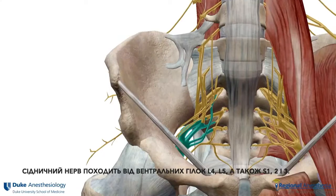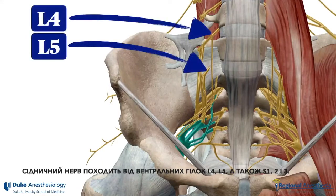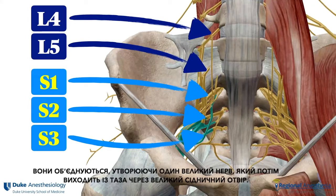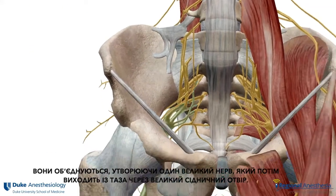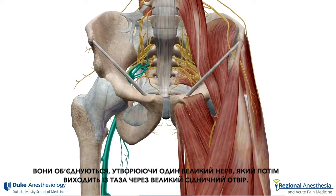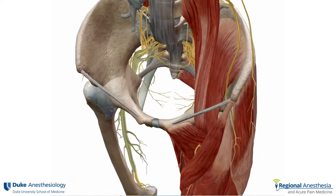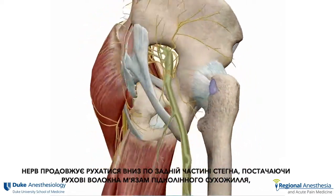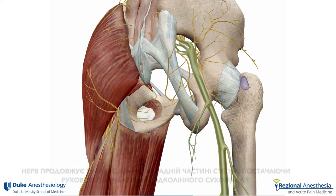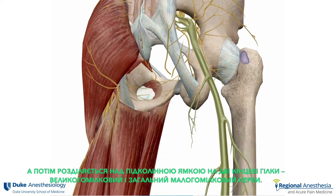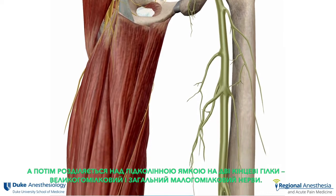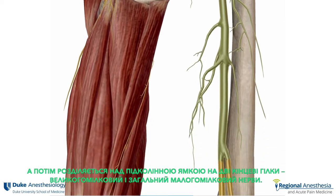The sciatic nerve is derived from the ventral rami of L4, L5, as well as S1, 2, and 3. These combine to form a single large nerve that then leaves the pelvis through the greater sciatic foramen. The nerve continues to course down the posterior thigh, supplying motor fibers to the hamstring muscles, before dividing above the popliteal fossa into its two terminal branches, the tibial and common peroneal nerves.